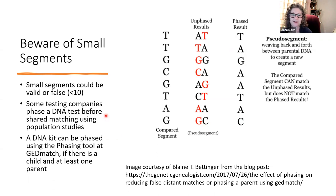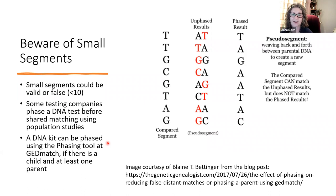Some testing companies phase the DNA before shared matching using various algorithms, including population studies, which is what Ancestry uses. If you have a parent and child at GEDmatch, a DNA kit can be phased using the phasing tool. I did this with my kit and my mother's kit to get a phased kit for my father that I can use at GEDmatch.